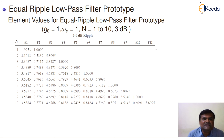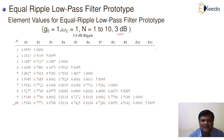Now we will see element values for an equally ripple filter with 3 dB ripple. In the previous part we considered 0.5 dB; here we consider 3 dB ripple. For a 3 dB ripple, these are the values. This table goes up to n equal to 10, and you can use the values according to the order of the filter required.